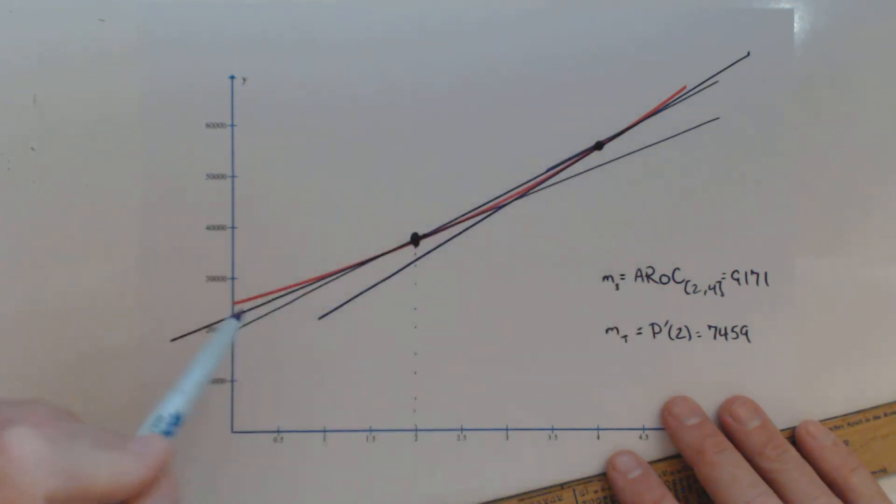Well, notice our graph is concave up. When a graph is concave up, that means we have an increasing rate of change. We're seeing it in this problem. Our population is increasing at an increasing rate.